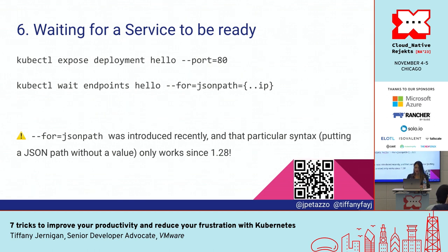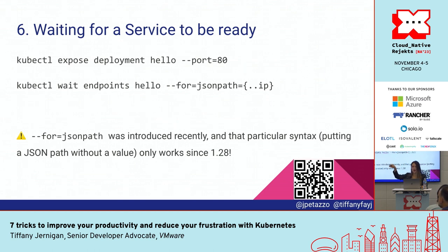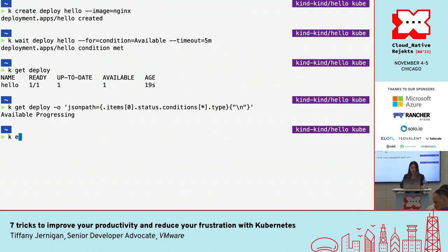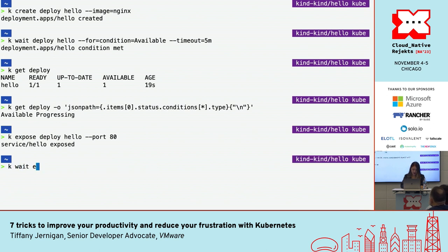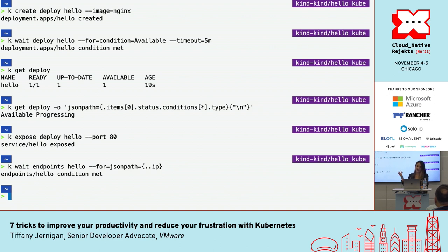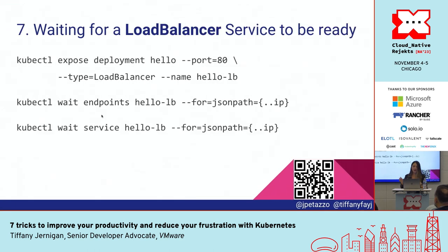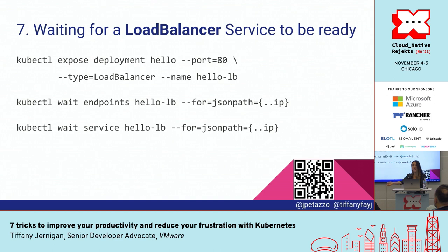You can also do this for services. You could expose the deployment and then actually wait for endpoints. As of a pretty recent version of Kubernetes, you can use --for and give it a JSONpath. Then instead of having to find wherever .ip is, you can just do .ip and it will find that for you. Basically you can wait for endpoints, and if you have a type LoadBalancer, you can specifically wait on the service to see that the external IP is up.